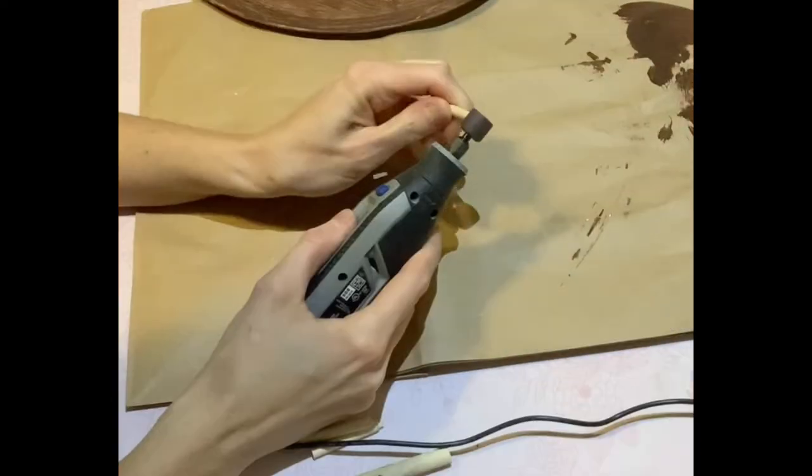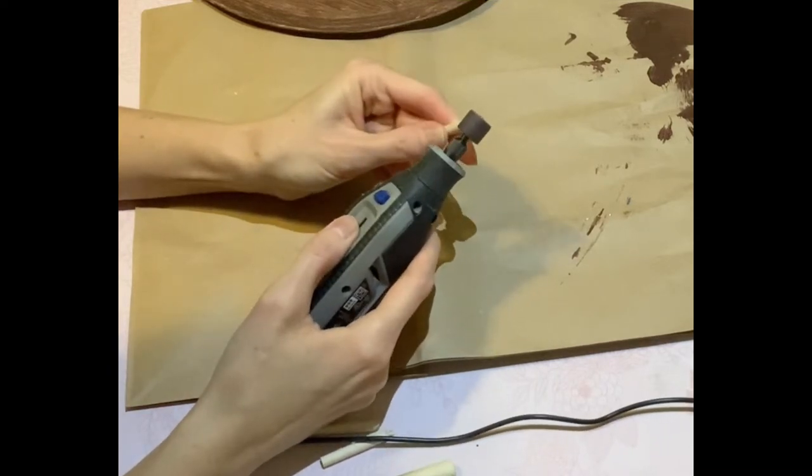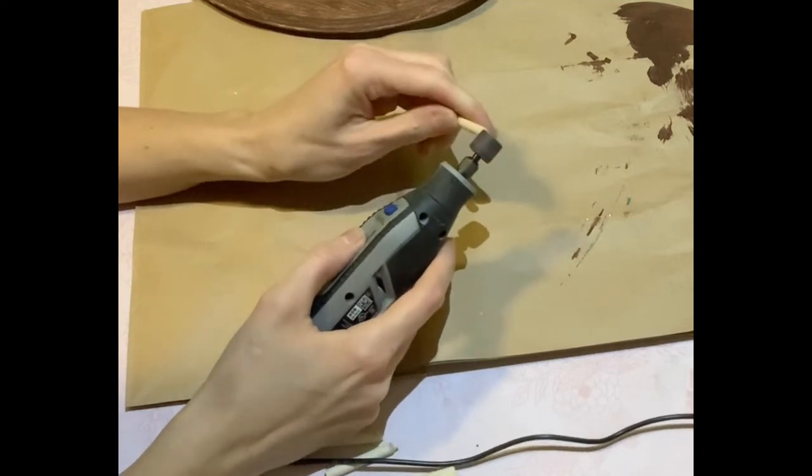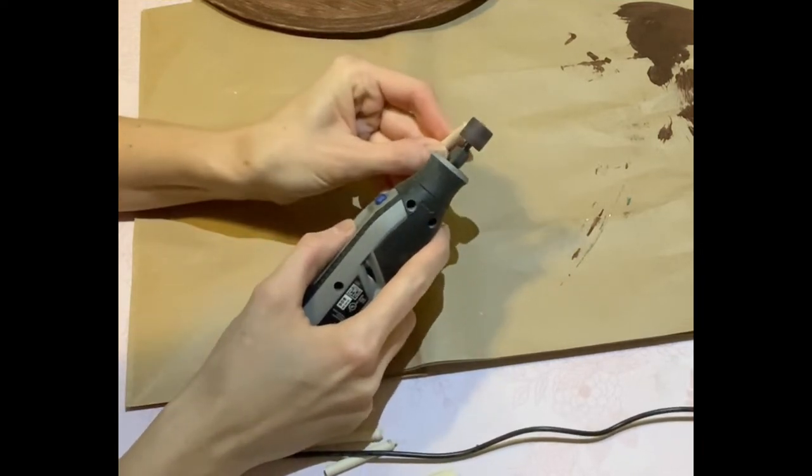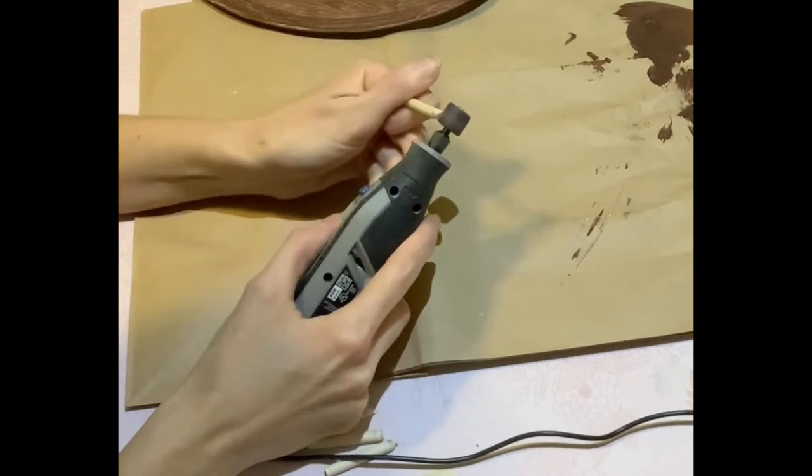I'm taking my Dremel—my husband bought this for me from Home Depot. I can leave the link in the description box below. I'm sanding the edge of the dowel rods, so I only have to do one side per dowel rod.